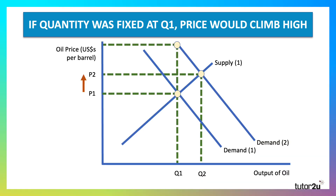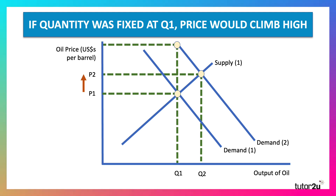Let's take the market for oil again. That demand shifted out from D1 to D2. Now, if the quantity was fixed at Q1, then the price would climb much higher to clear the market. So that would be a case where, if there was a limited supply, the market price would adjust to a greater extent.